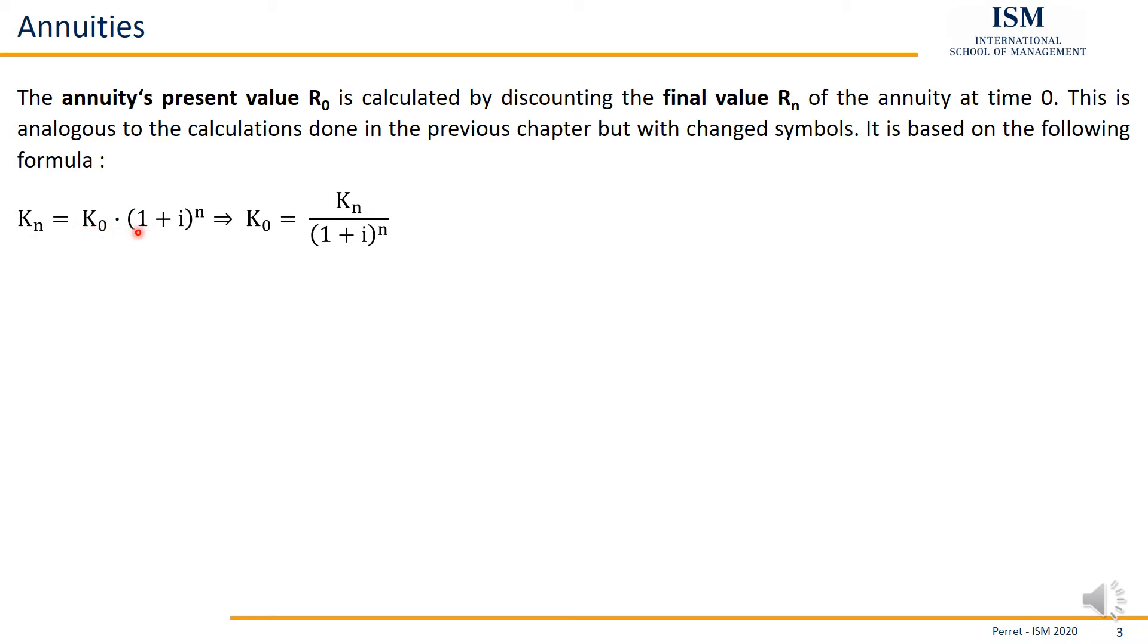So we divide by this expression, giving us this formula, which means we take our final value, divide this by 1 plus I to the power of N, which actually means nothing else than discounting the final value for N periods, back to period 0. When we do this, we have the present value of our annuity payment.